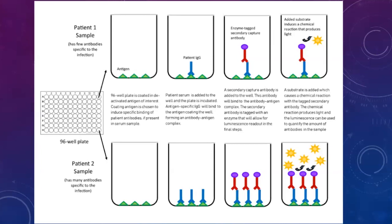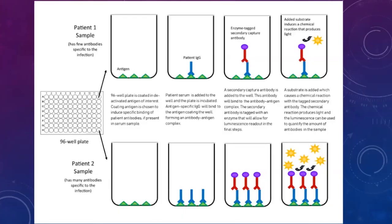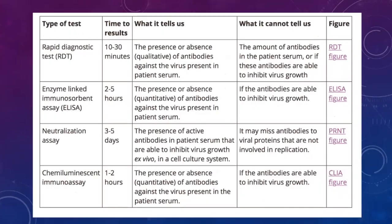Comparing the four techniques: rapid diagnostic tests have a turnaround time of 10 to 30 minutes; ELISA takes 2 to 5 hours; chemiluminescence takes 1 to 2 hours; neutralization assays are not commonly used. ELISA and chemiluminescence provide quantitation of antibody levels. What these tests cannot currently confirm is whether the detected antibodies are protective or inhibit the virus — there is still a lot of research ongoing in this area.